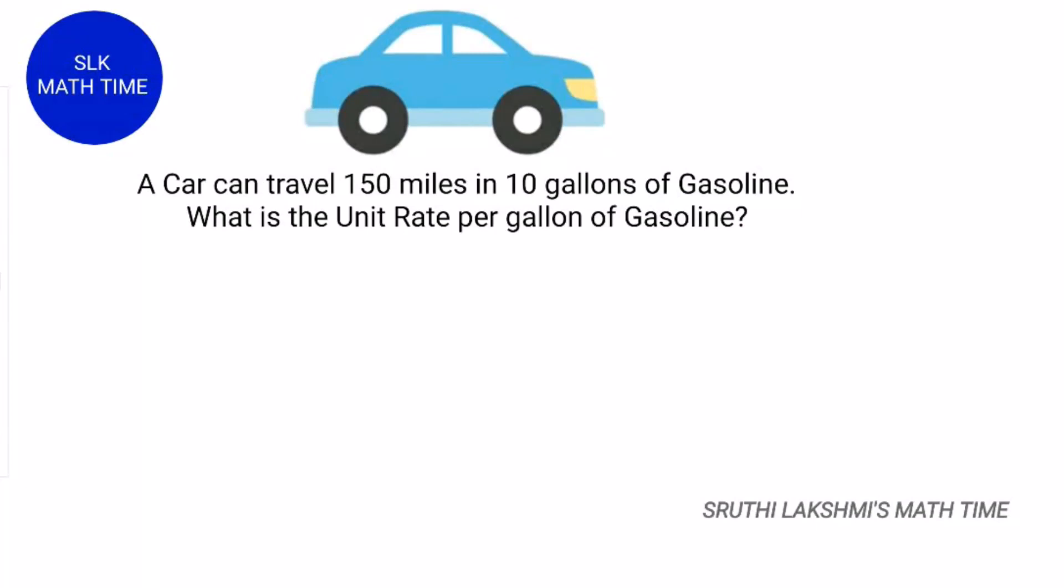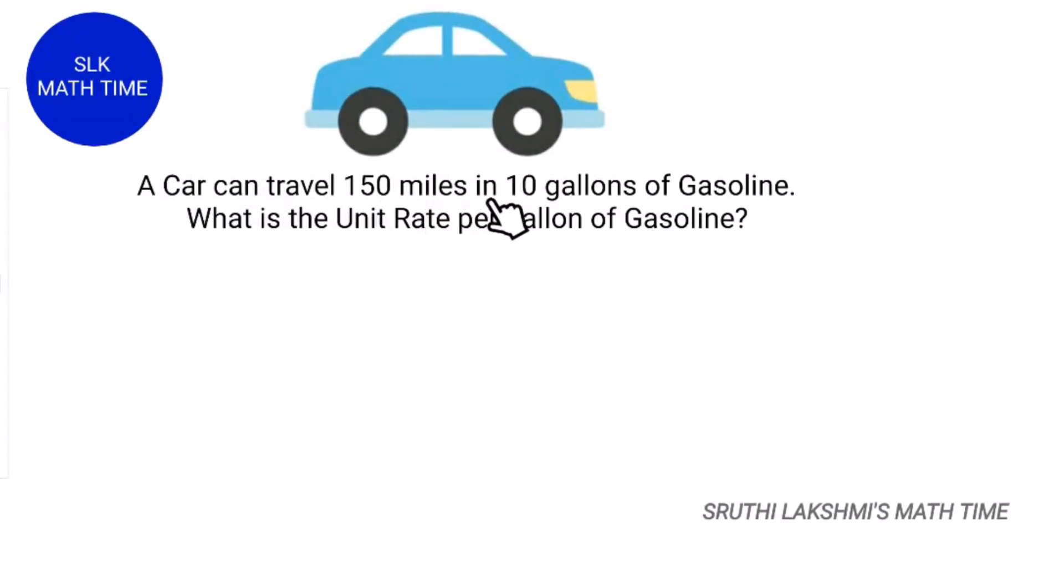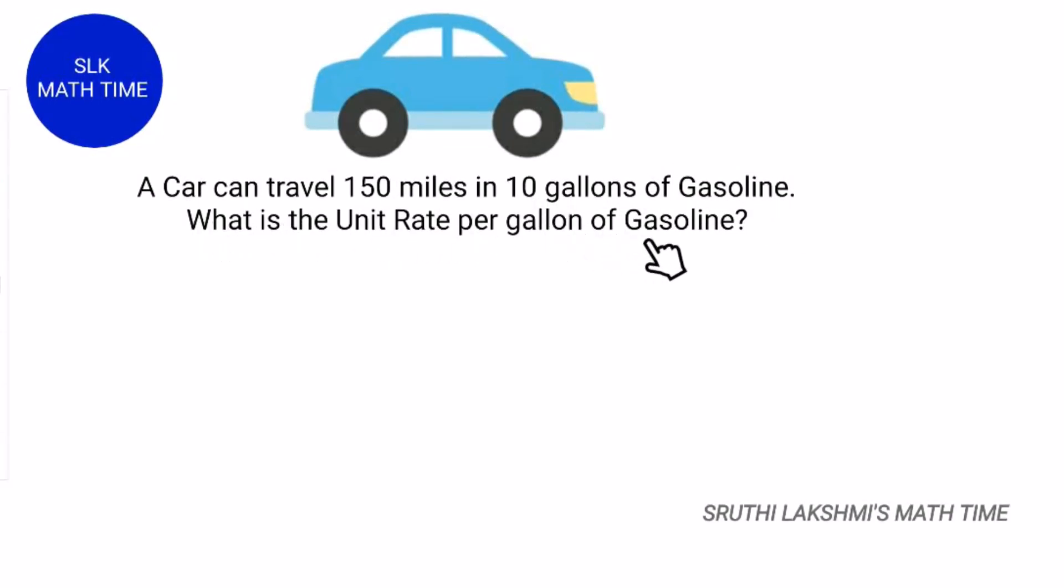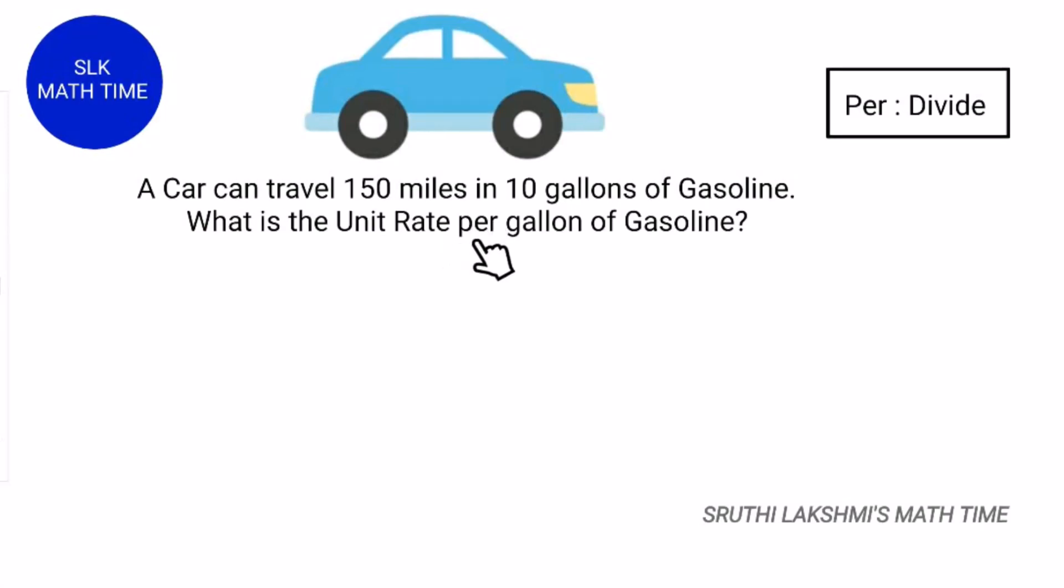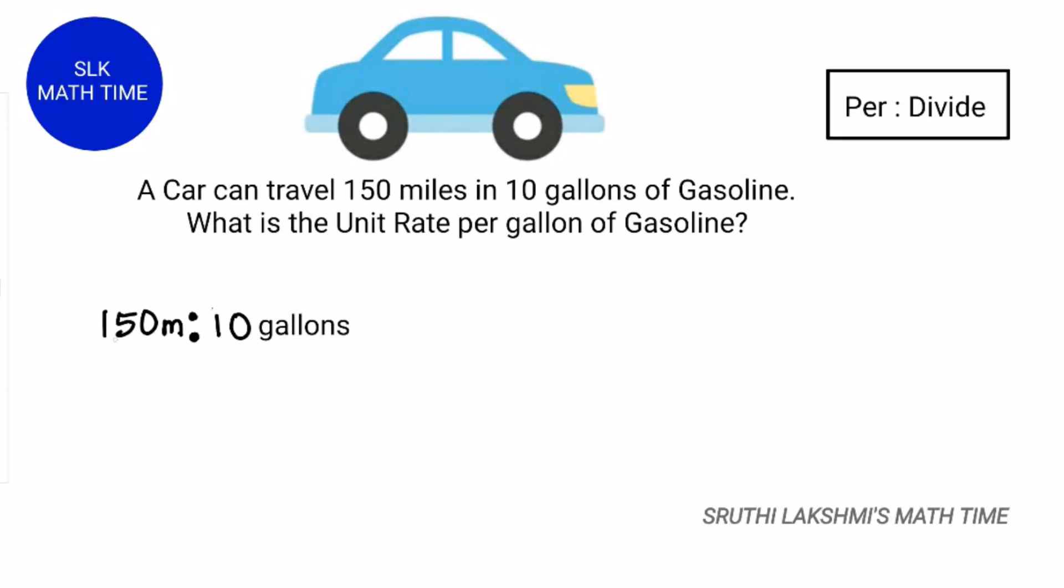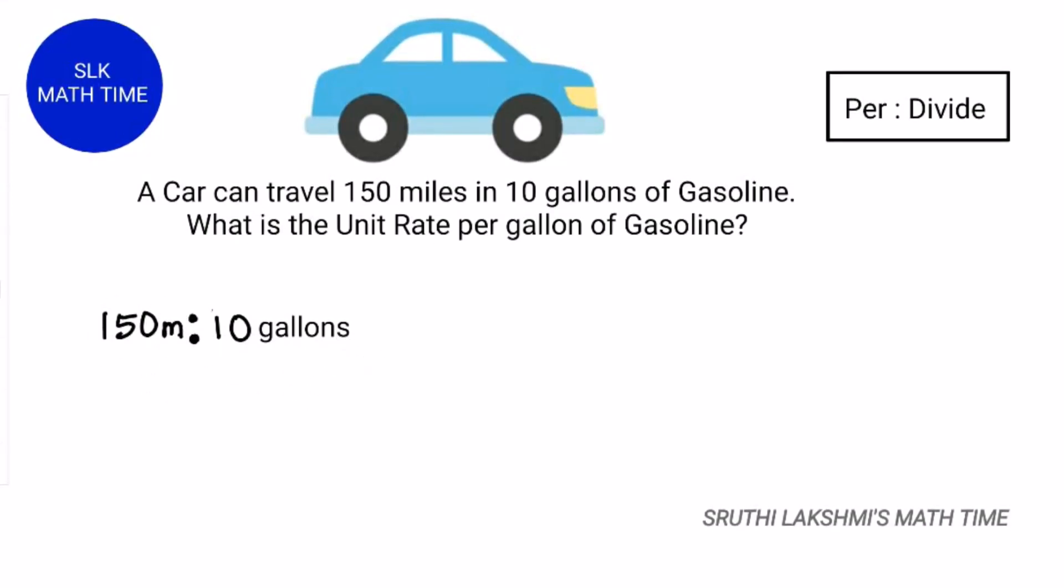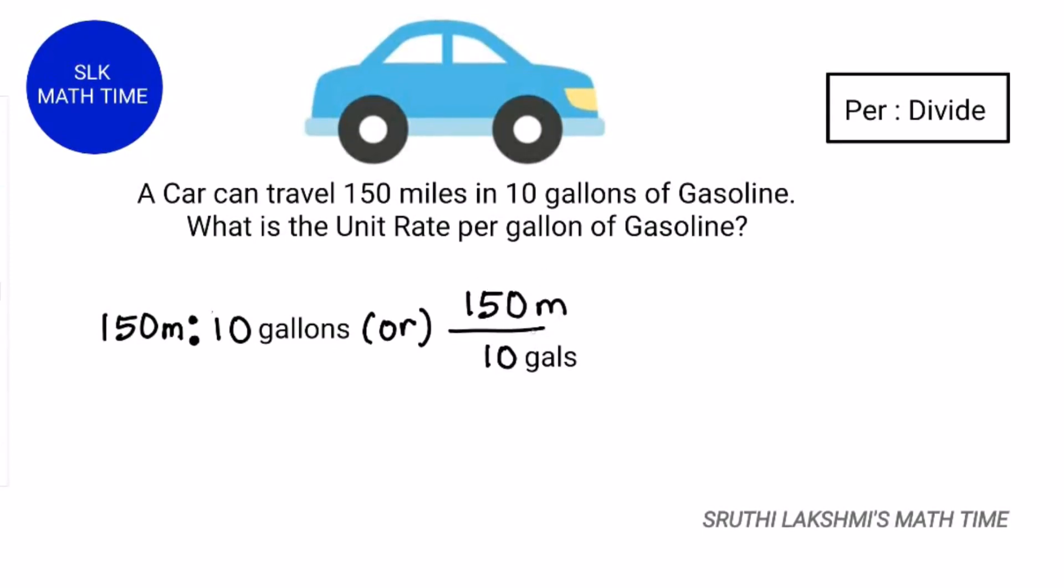Let's see another example for easy understanding. A car can travel 150 miles in 10 gallons of gasoline. What is the unit rate per gallon of gasoline? Per is nothing but divide. This can be written as 150 miles is to 10 gallons, or 150 miles by 10 gallons.